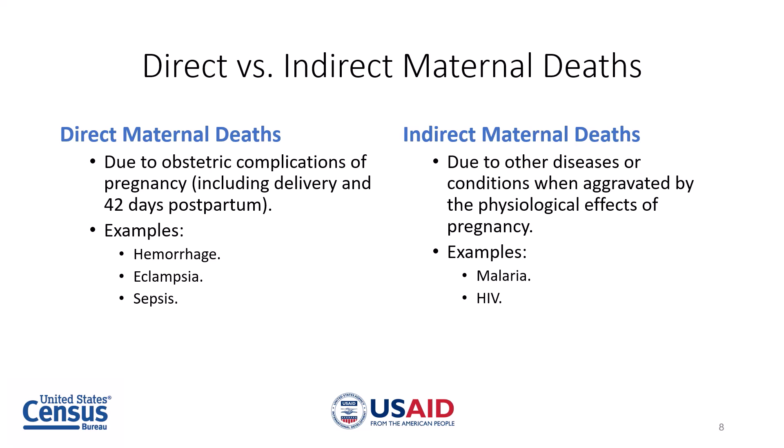Indirect maternal deaths are deaths due to other diseases or conditions when aggravated by the physiological effects of pregnancy. These include malaria and HIV. You may be surprised to see diseases like malaria and HIV classified as maternal deaths, since they do not seem directly related to pregnancy. This is because these diseases may be aggravated by the physiological effects of pregnancy. Deaths from malaria or HIV are considered indirect maternal deaths if they occur during pregnancy or within 42 days of termination of pregnancy.